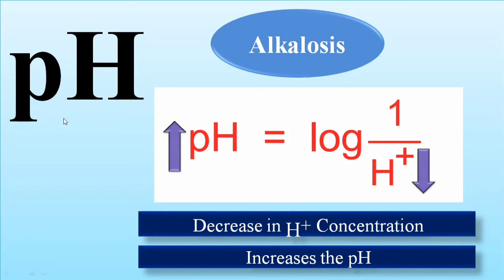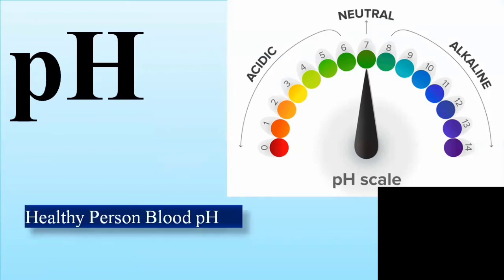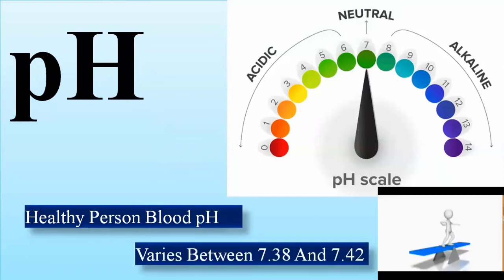Because of pH deviations from the normal range, it will lead to acidosis or alkalosis depending on the concentration of hydrogen ion. As mentioned in the previous lecture regarding sources of hydrogen ion — for a healthy person, the pH of the blood varies between 7.38 and 7.42. This is the normal range, as shown on the pH scale.